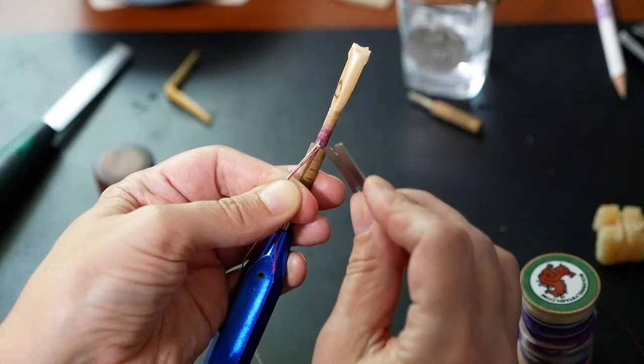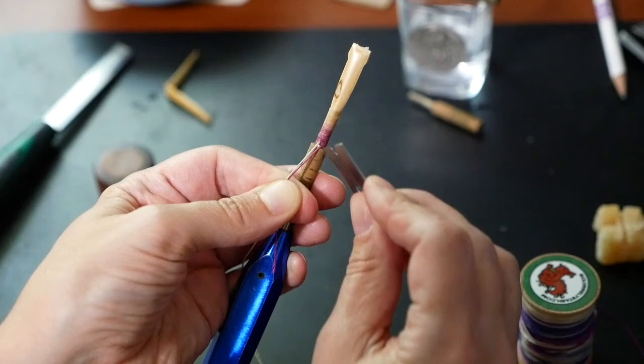Using scissors or a razor blade, cut the two tails close to the staple. Throw them down and you now have a beautiful fancy knot. Good job!